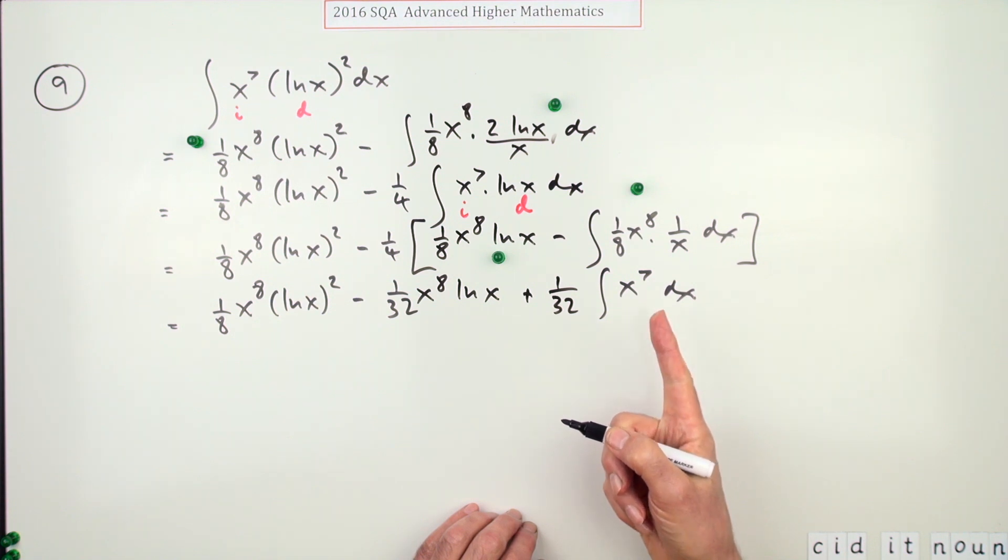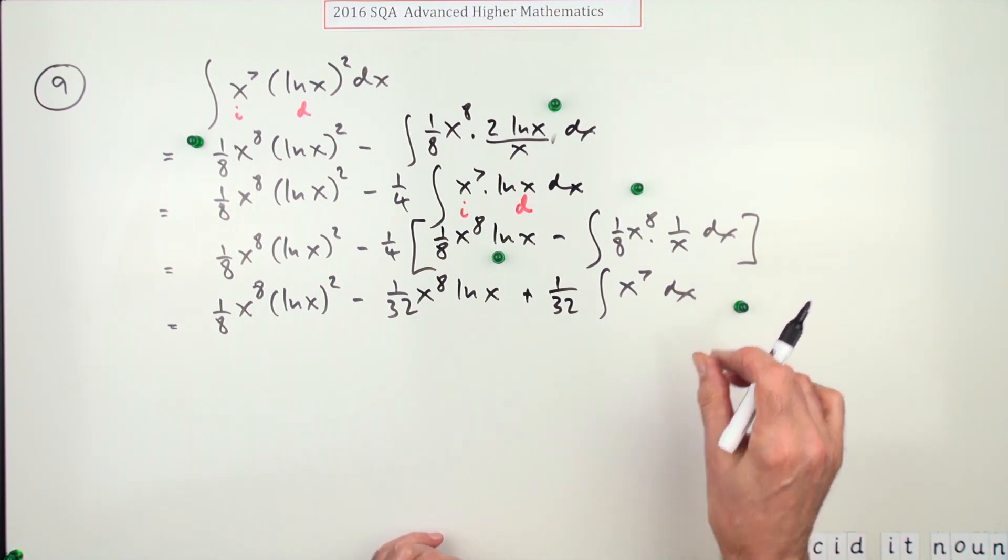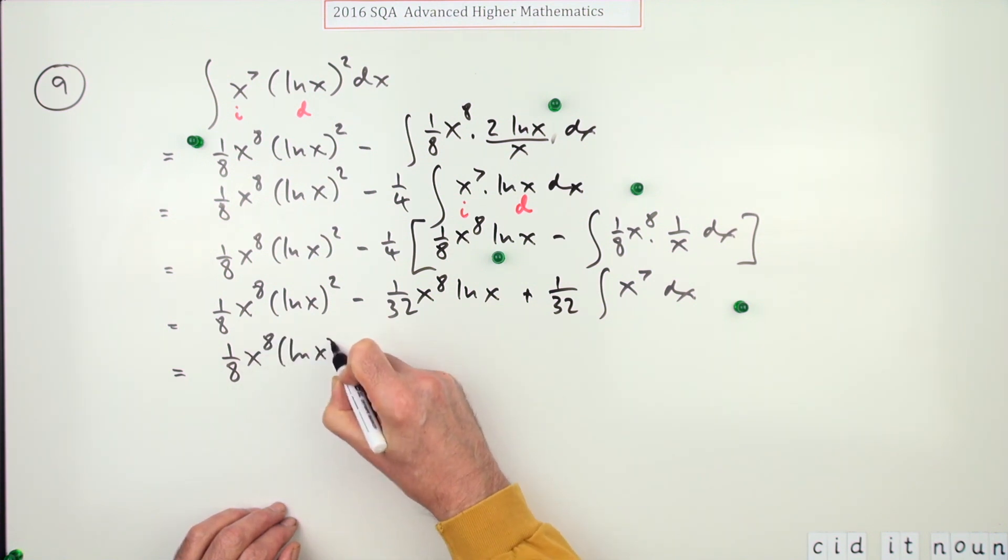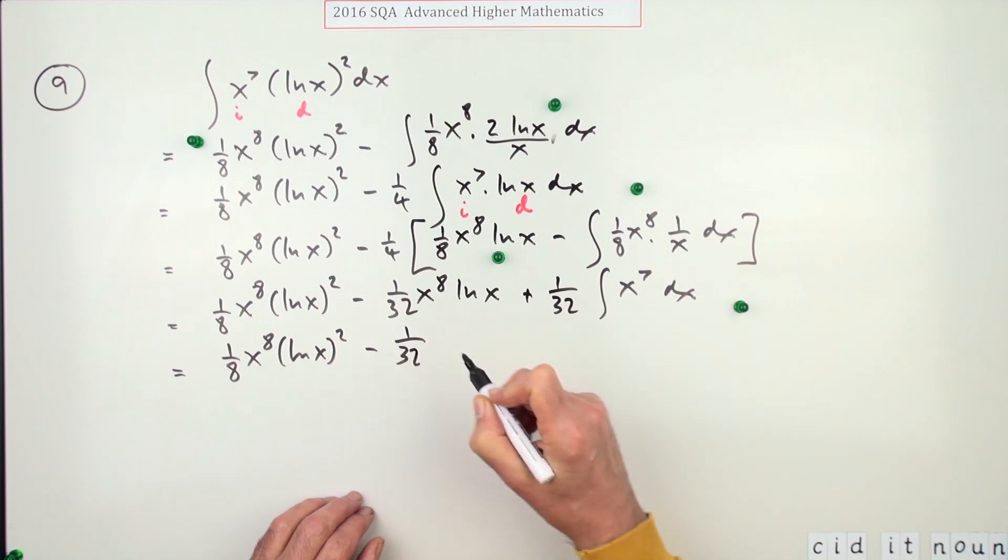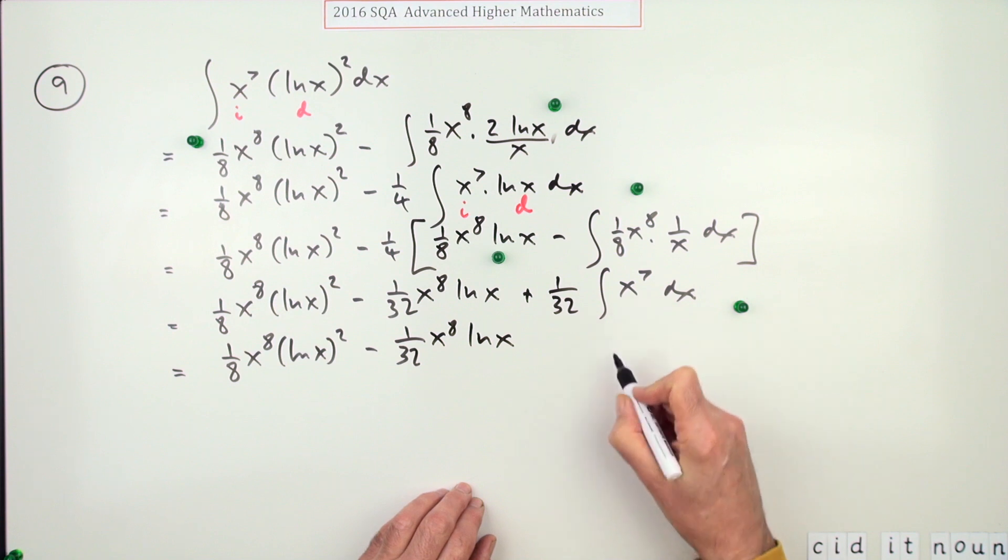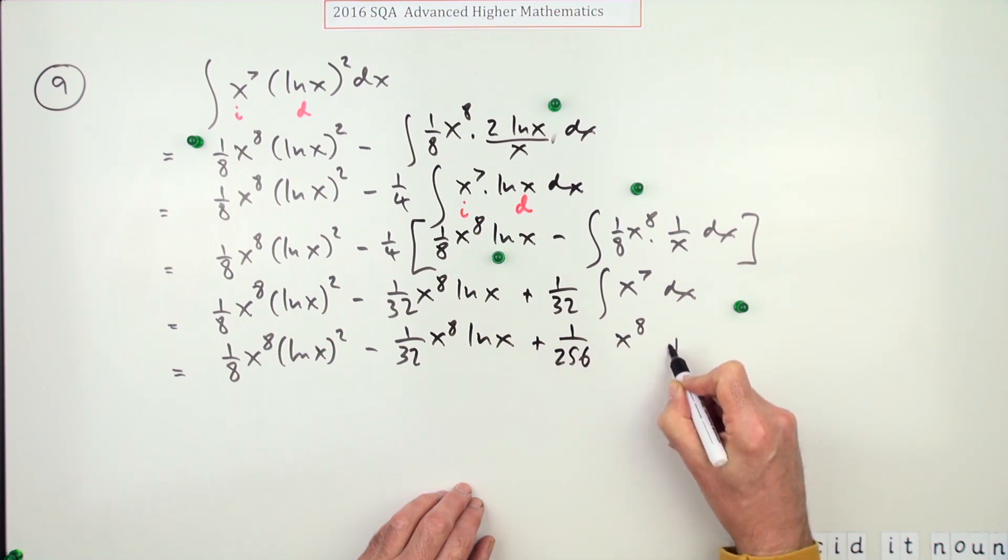Now there's still another mark for complete second application, but then there's a mark for simplify. Well, there's not actually an awful lot more to do because that virtually is it. So I've got that term with the square of the log, I've got this term with the log on its own, and then that's just going to go back up to eight and divide by eight. So that's one over 256, and then a plus C, and that is it finished. So that should be the six marks there.